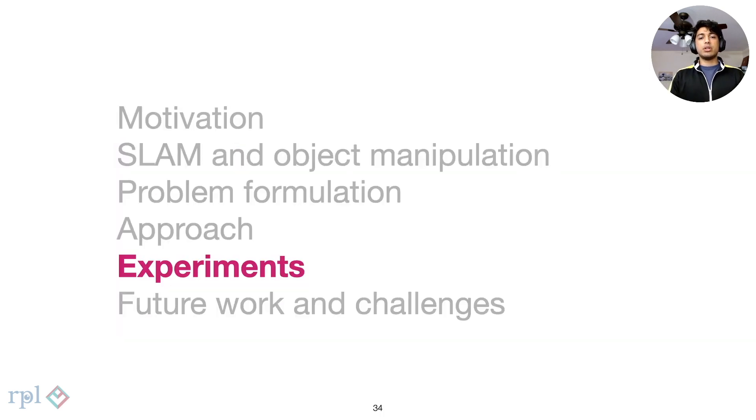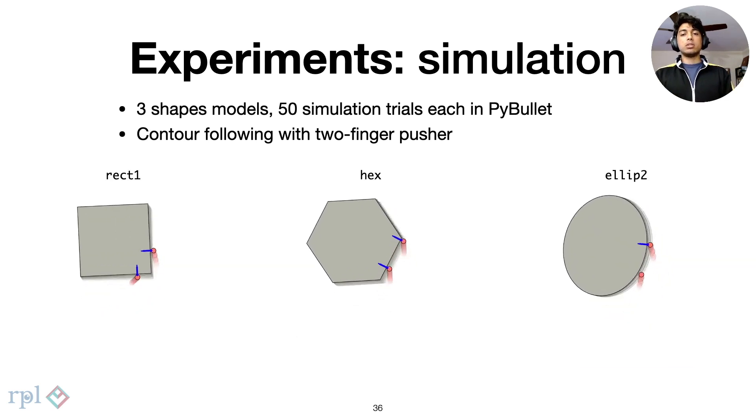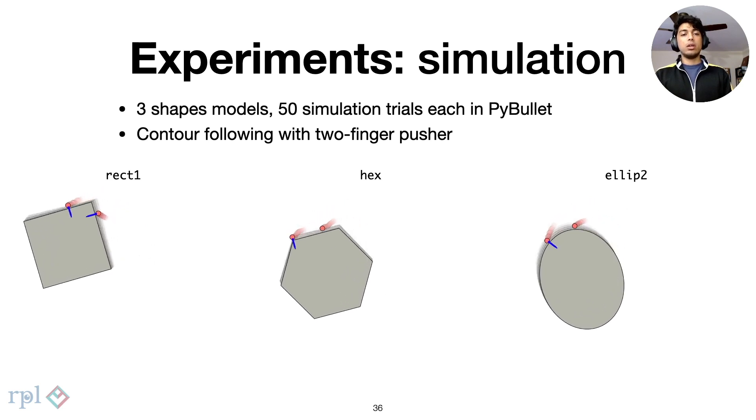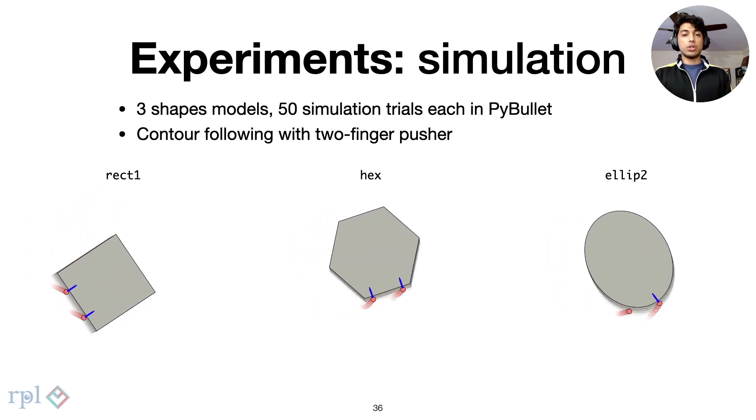We now demonstrate our method in a series of experiments. We first evaluate it in simulation using PyBullet. We collect 50 trials each of three shape models from the MIT push dataset. These are some examples of the contour-following trials that we collect. We use a two-finger setup and corrupt the measurements with Gaussian noise.